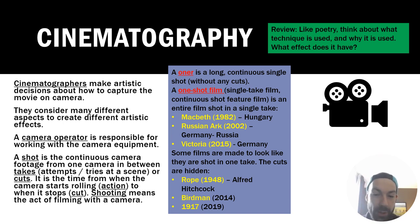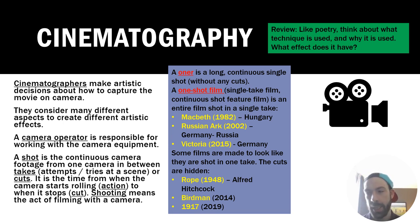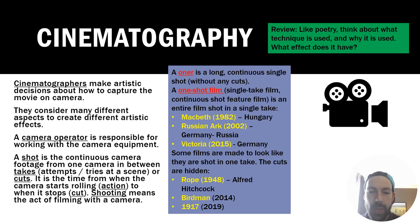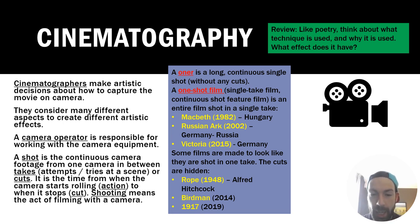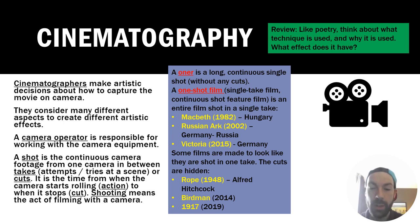Some films are made to look like they were shot in one take — pretend oners where the cuts are hidden. You can hide cuts as the camera moves behind sets or props, with a fast whip pan, a blurry shot, or with computer editing technology. Notable examples include Alfred Hitchcock's Rope from 1948 — probably the first iconic attempt — and more recently Birdman in 2014 and the World War One film 1917 from 2019.